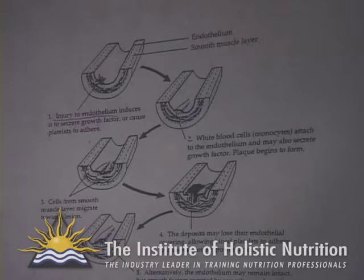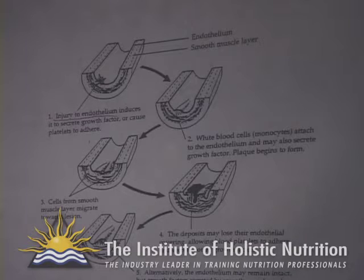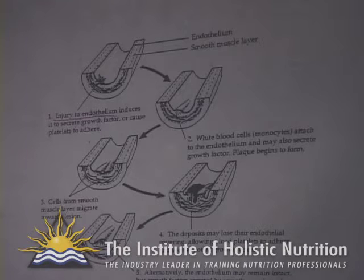Steps two through five represent what the modern medical system accepts and acknowledges, and drugs are designed to stop this process. In a way, it's like stopping your body from healing. When you go to the emergency room with cuts or bruises, no doctor lets you bleed out — they treat the wound. Yet for internal injury, drugs like cholesterol-lowering medication and aspirin actually prevent this healing process. Our holistic strategy makes more sense: rather than stopping the body from healing itself, we try to stop the initial injury from happening in the first place.